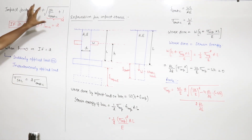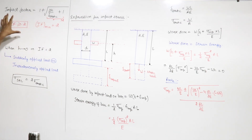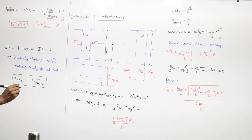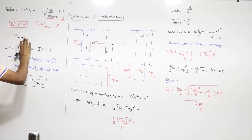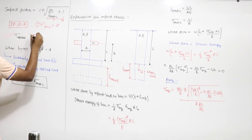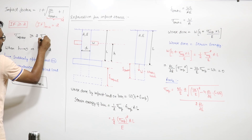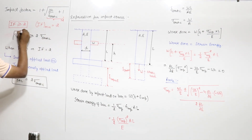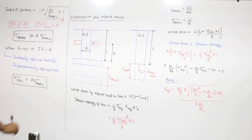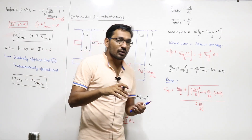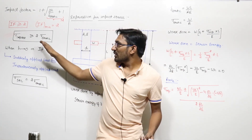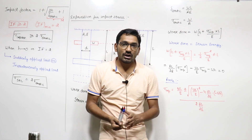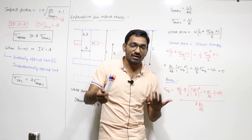We can say the impact factor is always greater than or equal to 2. The minimum value of the impact factor will be 2. So if the impact factor is greater than or equal to 2, the impact stress will always be greater than 2 times the static stress. The impact stress is always greater than or equal to 2 times the stress developed during static loading.